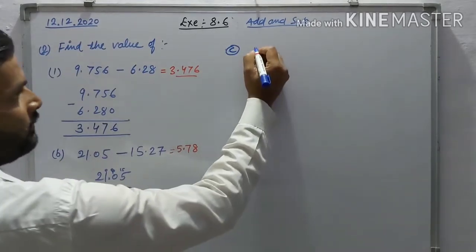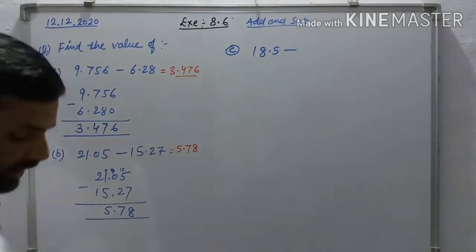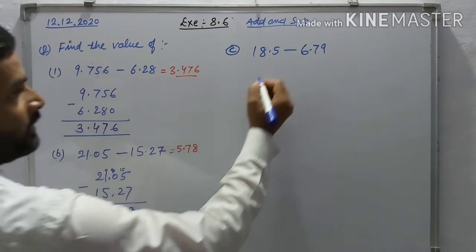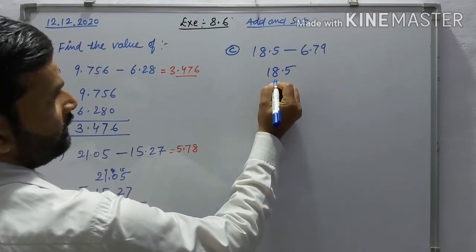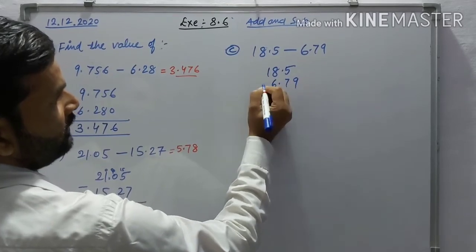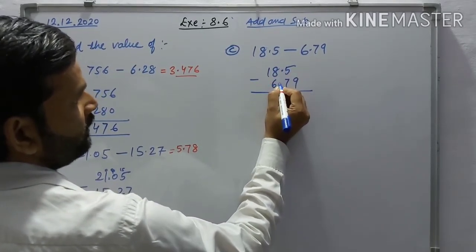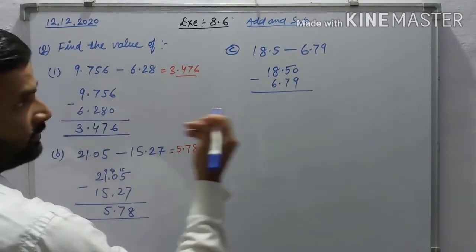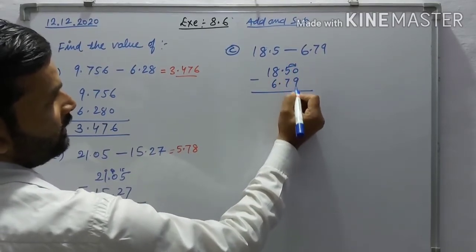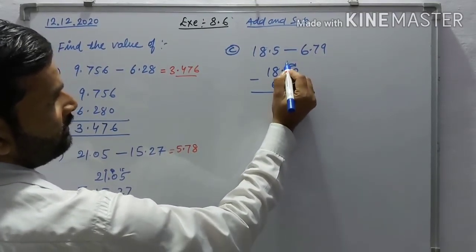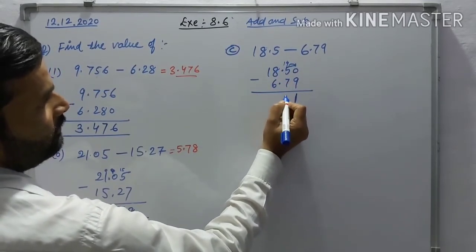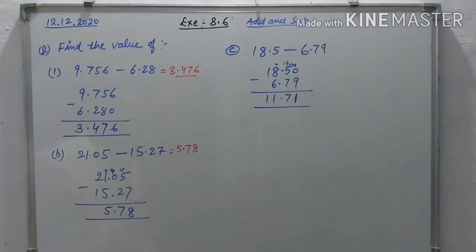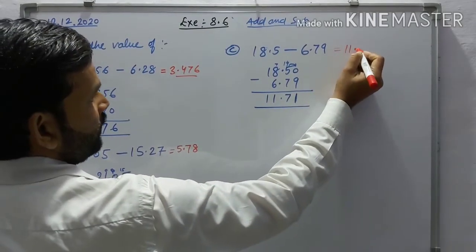Part (c): 18.5 minus 6.79. Write 18.50 and 6.79. Put 0 for alignment. Carry: 10 minus 9 is 1, 14 minus 7 is 7, 7 minus 6 is 1 — the answer is 11.71.